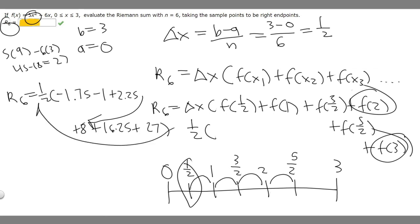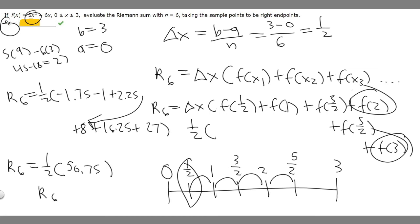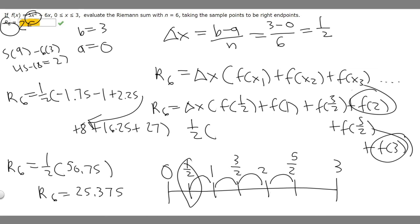Now we've got all our numbers; we just have to add them together and solve. R sub 6 is equal to 1/2 times all these numbers added up. Adding -1.75 + (-1) + 2.25 + 8 + 16.25 + 27 equals 50.75. So R sub 6 equals 1/2 times 50.75, which equals 25.375. That's the answer to our question.